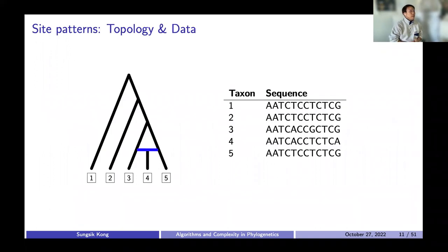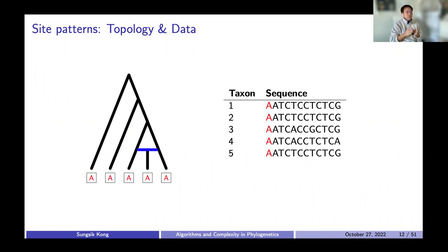So what do I mean by site patterns? A site pattern is a pattern of nucleotide assignment at the tips of a topology. For example, let's consider a network topology on the left side and the corresponding sequence alignment on the right side. If we select the very first column of the sequence alignment and map that on the topology, we will get a site pattern of A, A, A, A, A, A — telling us there is no variation between five species at that specific site.